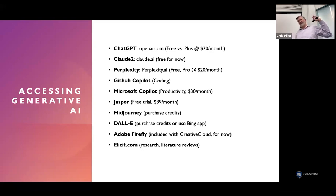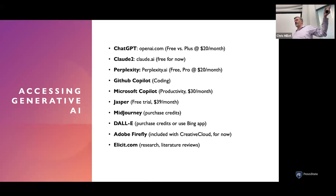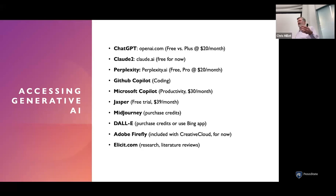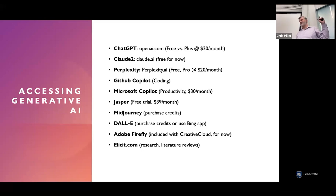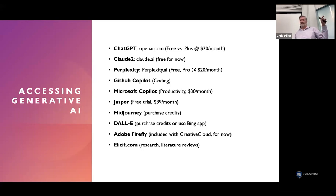In terms of specific tools: with the paid version of ChatGPT, you can take files and have a conversation with them — there's a big difference between the free and paid versions. Claude 2 was developed by folks who splintered off of OpenAI. That company has adopted what they call constitutional AI, which incorporates human values into the model as a safety mechanism to ensure responses are aligned with things like avoiding harmful bias. Perplexity is being built specifically as a generative AI for students, with capabilities for reading research papers and data analysis — many faculty I've talked to prefer it over ChatGPT.